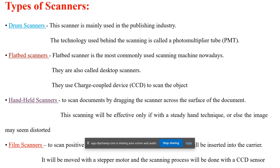Flatbed scanners are the most commonly used scanning machines nowadays. They are also called desktop scanners. They use a Charge Coupled Device (CCD) to scan the object, whereas drum scanners use the Photo Multiplier Tube (PMT).